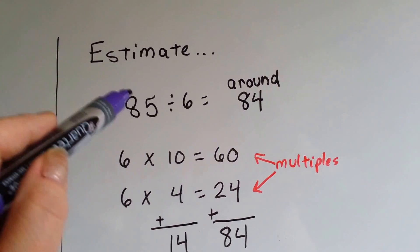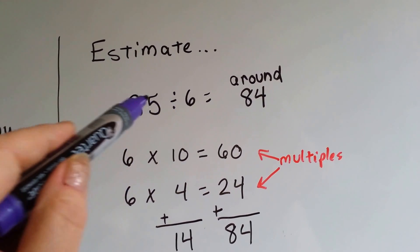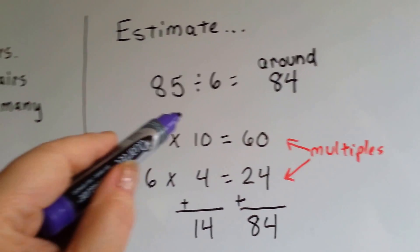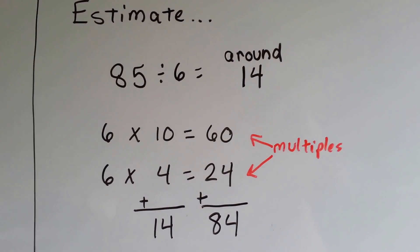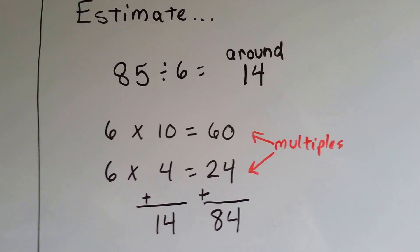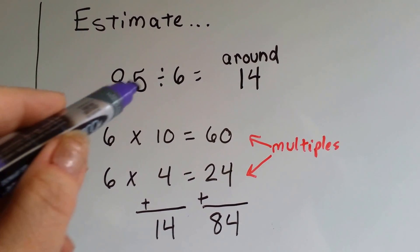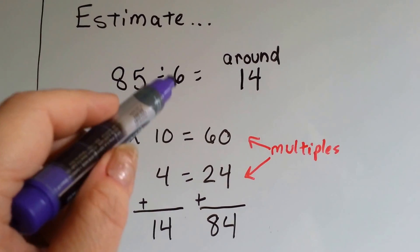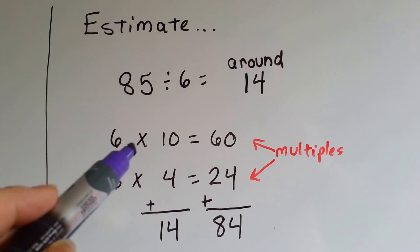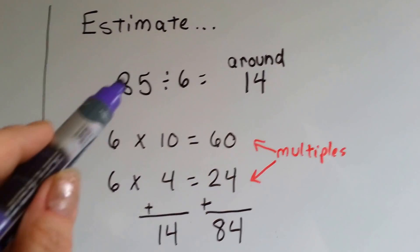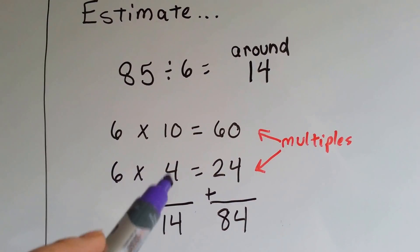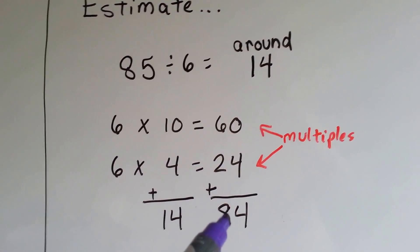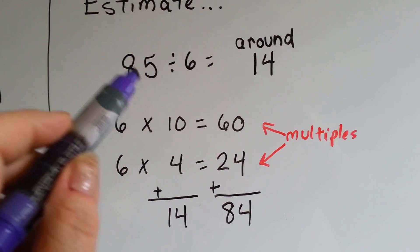What if you have 85 divided by 6 and you wanted to estimate what the answer would be? Well, let's see how big we can get with the 6. 10 times 6 is 60, but that's not close to 85. We need to add more. If we do 6 times 4, which is 24, that'll get us to 84. That's pretty close to 85.